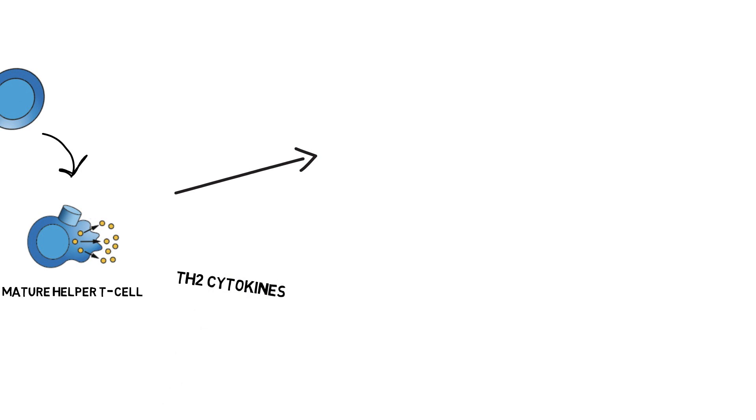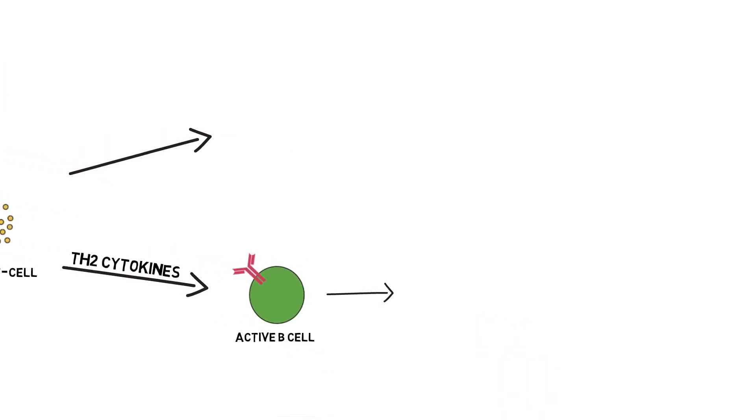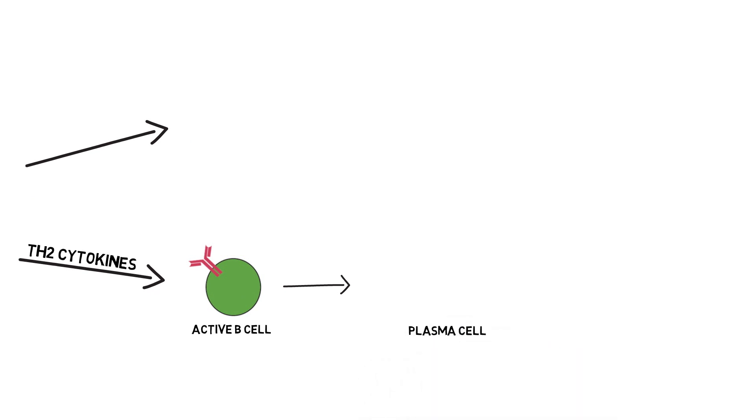These cells can then release specific chemical messengers known as cytokines. In this case, it's Th2 cytokines. Th2 cytokines facilitate the differentiation and activation of B cells. The activated B cells can produce antigen neutralizing antibodies, which basically means that upon viral particles entering our system, these antibodies can neutralize them.